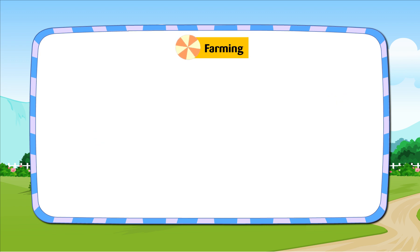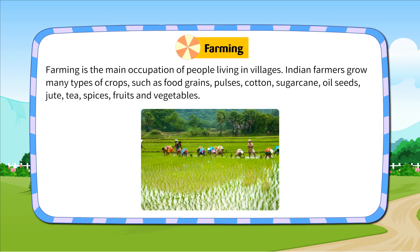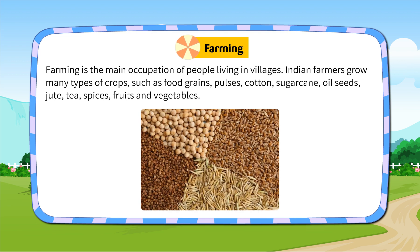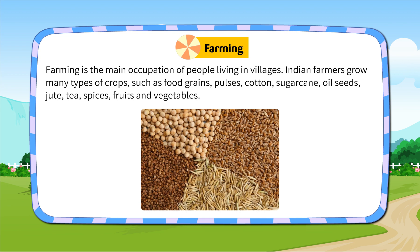Farming is the main occupation of people living in villages. Indian farmers grow many types of crops, such as food grains, pulses, cotton, sugar cane, oil seeds, jute, tea, spices, fruits and vegetables.